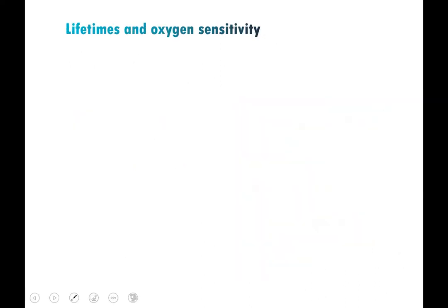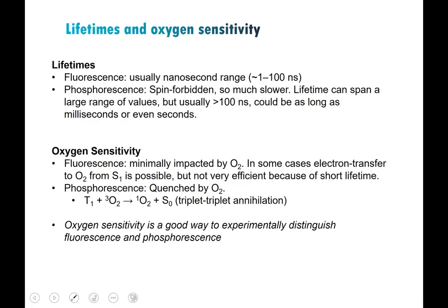Important differences between fluorescence and phosphorescence come from their different lifetimes. Fluorescence typically has nanosecond lifetimes — most commonly 1 to 10 nanoseconds, rarely more than 100 ns. Phosphorescence lifetimes span a much wider range but are usually more than 100 nanoseconds — they can extend to microseconds, milliseconds, or even seconds depending on the compound. For the types of compounds we work with, microseconds is most common for phosphorescence.